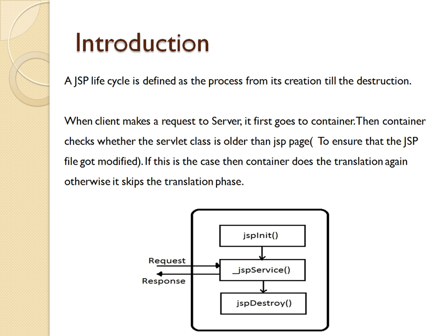This process starts when a client makes a request to the server. As you can see in this diagram, we generally send a request with the help of a browser. The browser sends a request for a 'Hello World' JSP page. That request is sent to a server, which recognizes it as a JSP page and sends it to the container. The container processes it and sends it back to the server, which sends it back to the client.